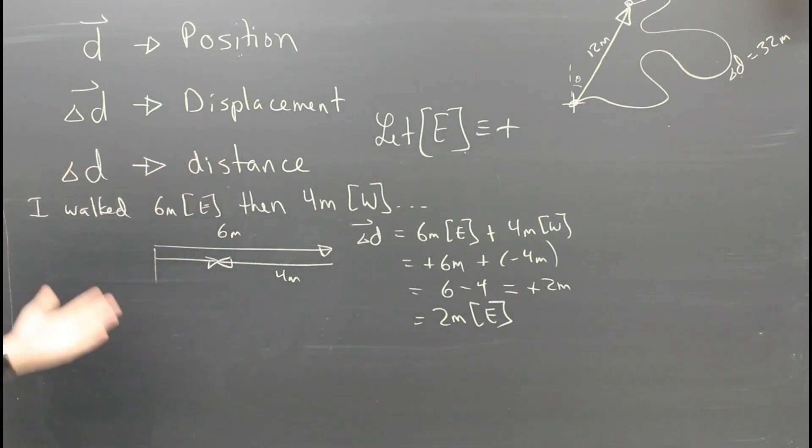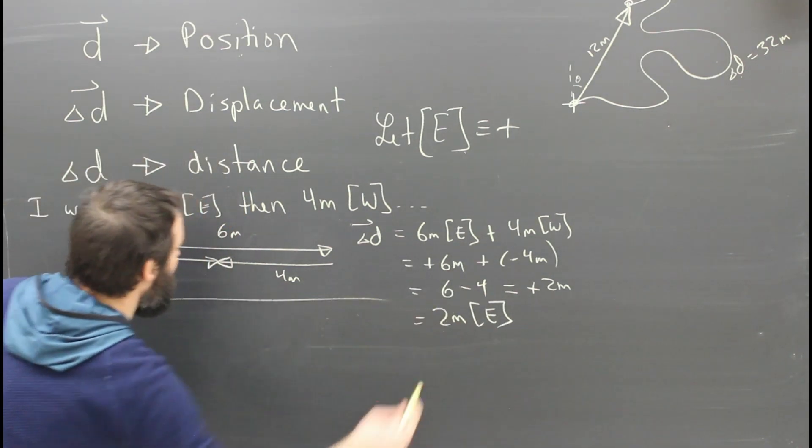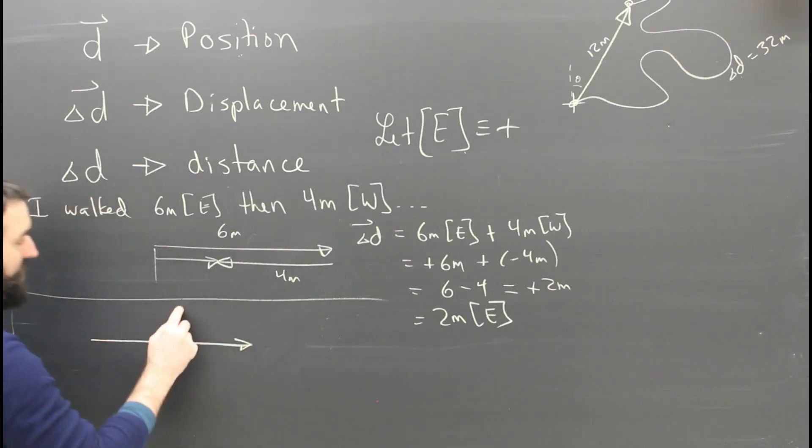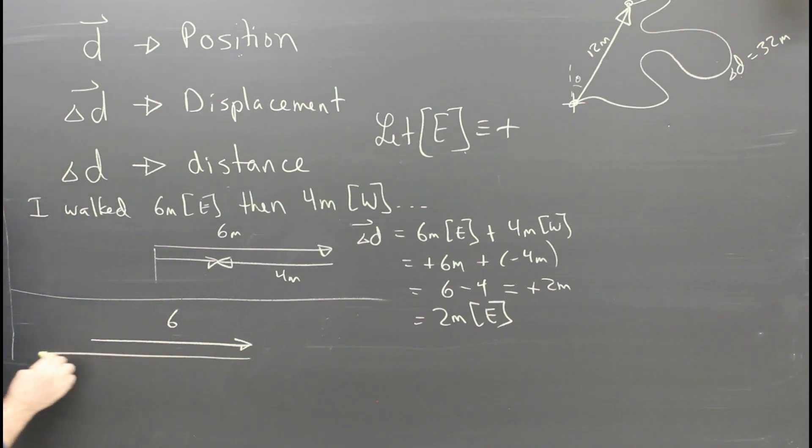That seems simple enough, but what if, for my next walk, I went six meters east and then I went eight meters west? What would my displacement be in this case?